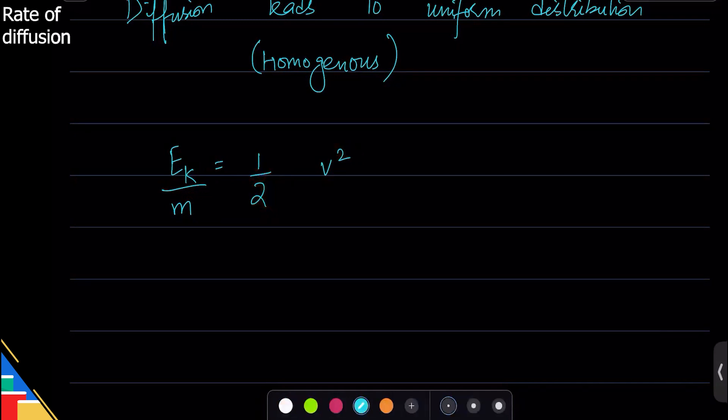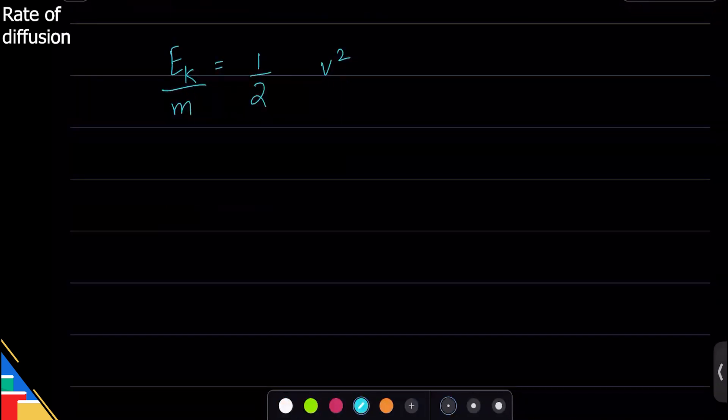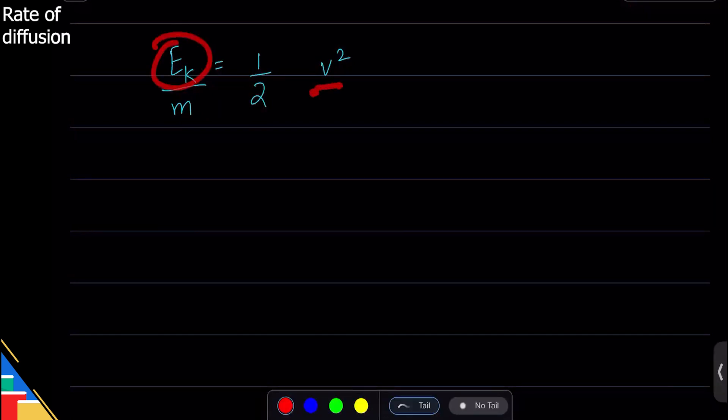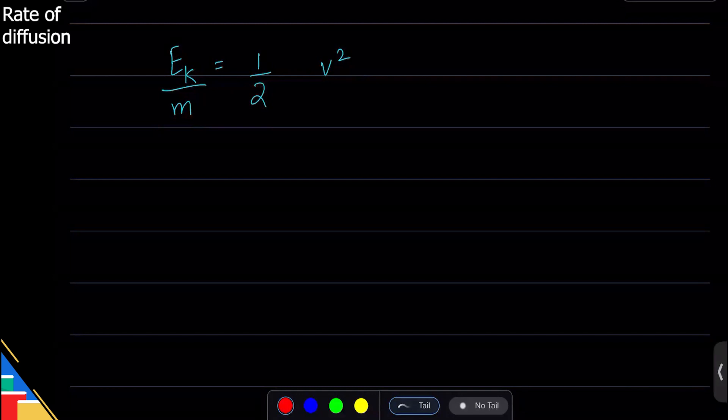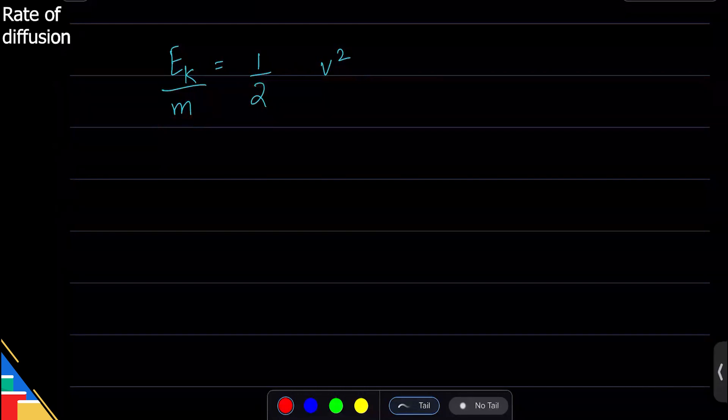We can see that kinetic energy directly affects the speed because they're on the same level, and mass and speed are inversely related. That shows that things with high mass moves slower if you want them to move at fixed speed.